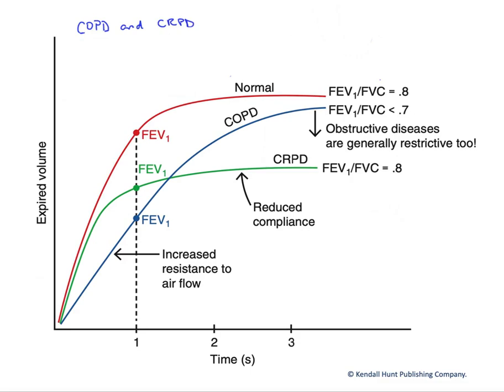In this graph, we're going to look at how we can utilize spirometry to show the differences between chronic obstructive pulmonary diseases, such as emphysema, and chronic restrictive pulmonary diseases, such as fibrosis.